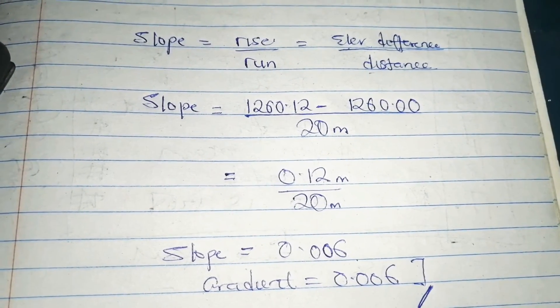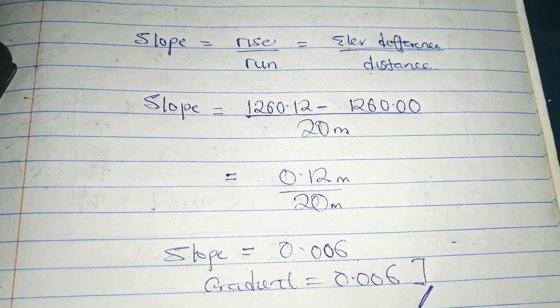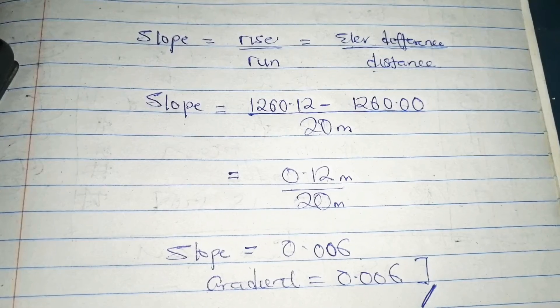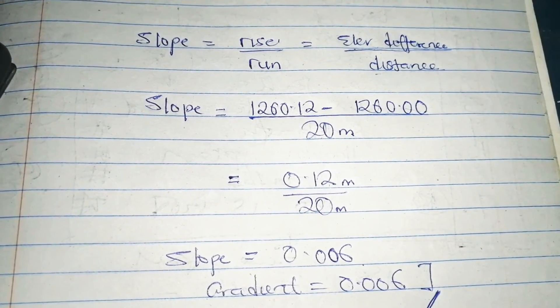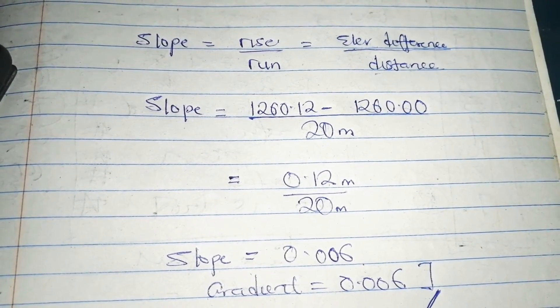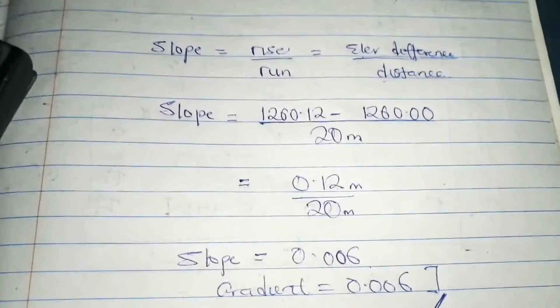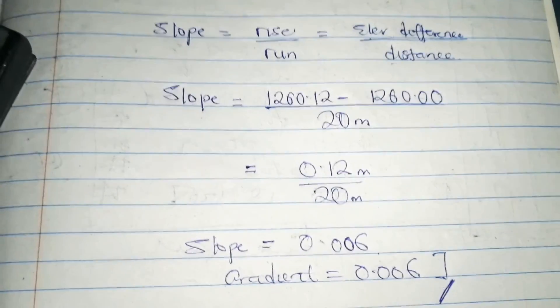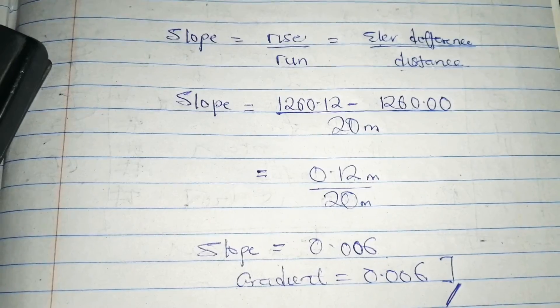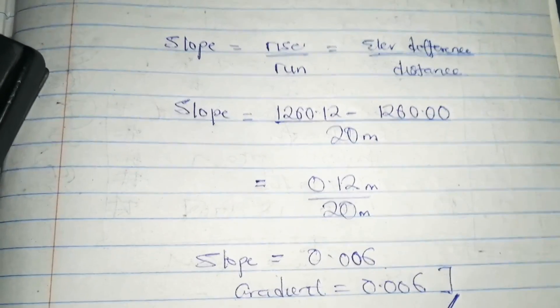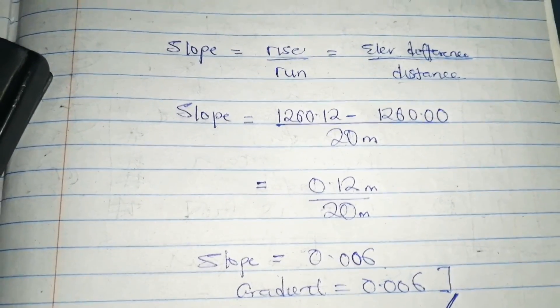In the other video that I will post after this, I will use the slope to calculate the elevation between two points. Then I will calculate the invert levels of the pipe. We will know how to calculate the slope, how to calculate the elevations, and how to calculate the invert levels of the pipe.